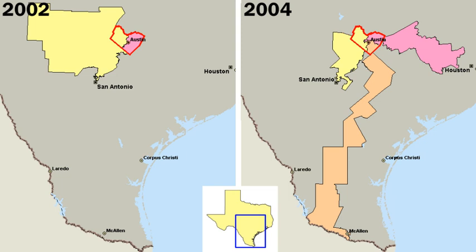The United States Constitution does not mention political parties, primarily because the Founding Fathers did not intend for American politics to be partisan. In Federalist Papers No. 9 and No. 10, Alexander Hamilton and James Madison, respectively, wrote specifically about the dangers of domestic political factions. The first President of the United States, George Washington, was not a member of any political party at the time of his election or during his tenure as President. Washington hoped that political parties would not be formed, fearing conflict and stagnation. Nevertheless, the beginnings of the American two-party system emerged from his immediate circle of advisors.